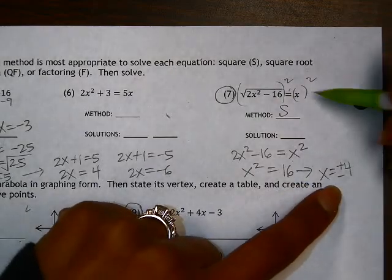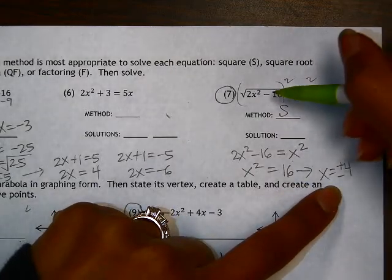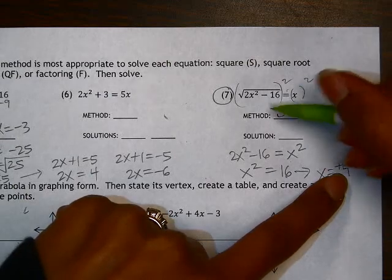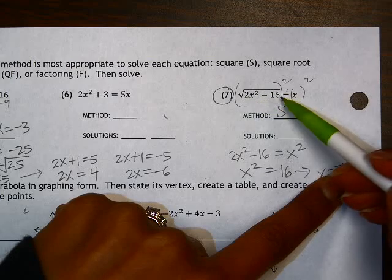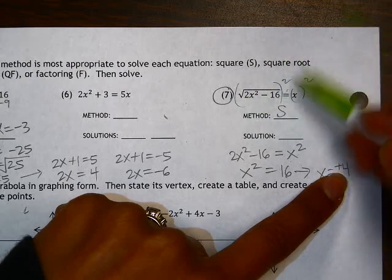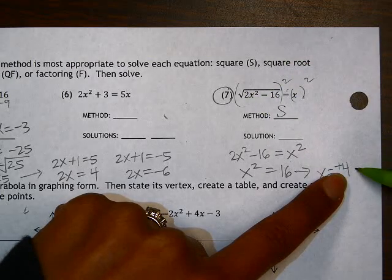We should always check for extraneous solutions. So when we go back to the original problem, if I plug positive 4 in, that would be 2 times 16, which is 32 minus 16 is 16. Square root of 16 is 4, which is equal to x.